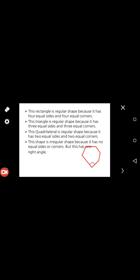This quadrilateral is a regular shape because it has two equal sides and two equal corners. This shape is an irregular shape because it has no equal sides and no equal corners. But this one has a right angle. This is a right angle, 90 degree angle.